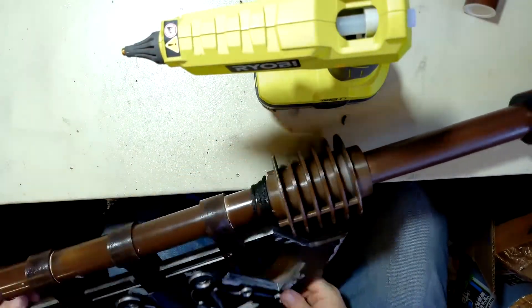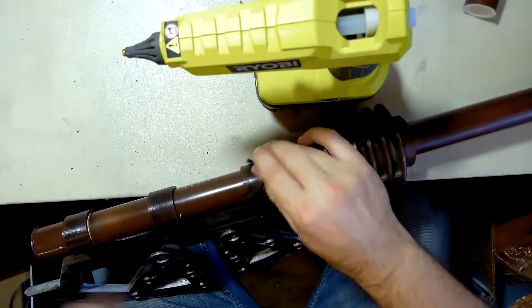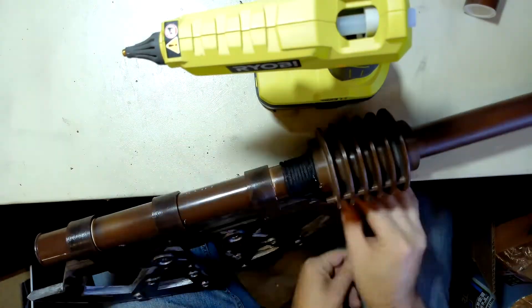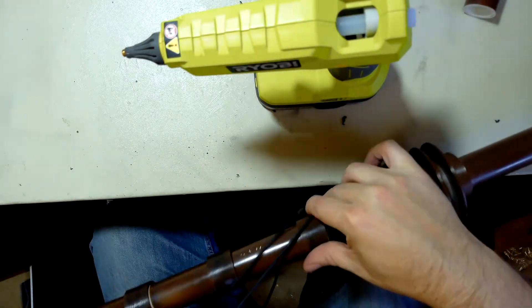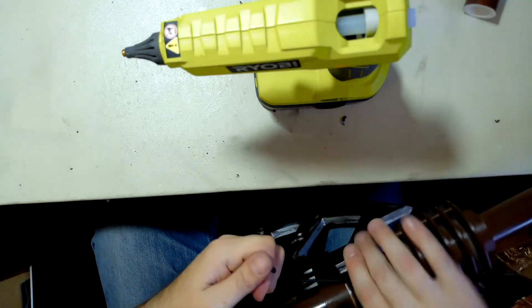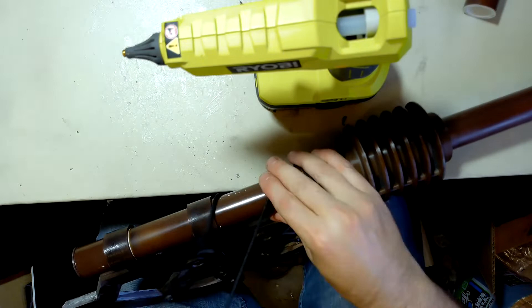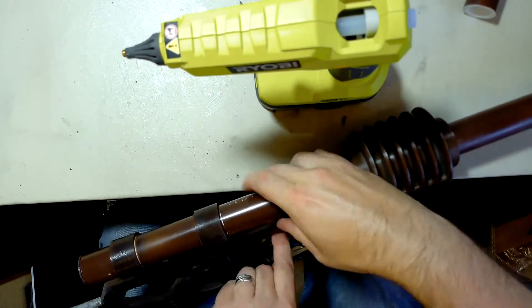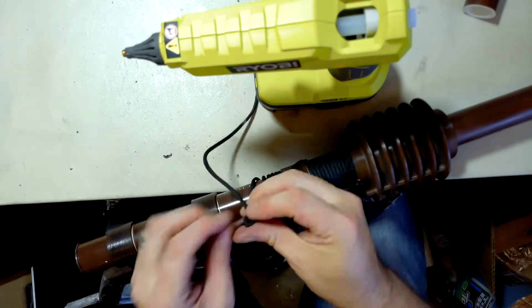Then I decided to just do a simple wrap of paracord around the top. It was a lot harder to do with the axe head already glued in place. I should have thought about that before I put it in place, but it was an afterthought.